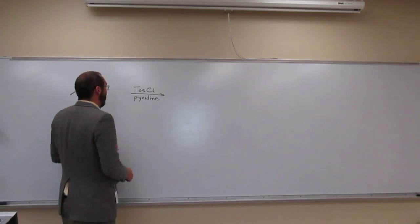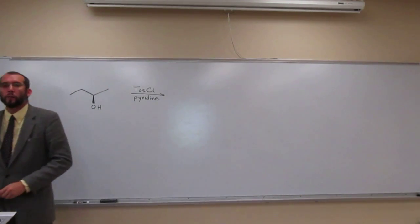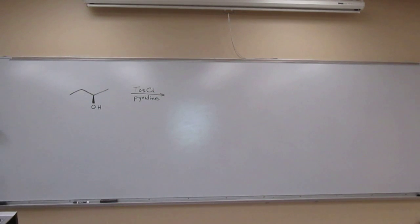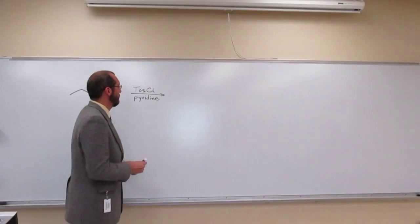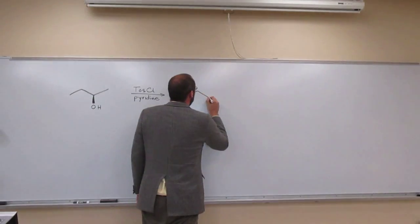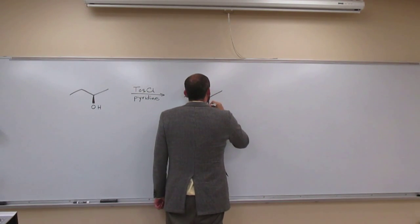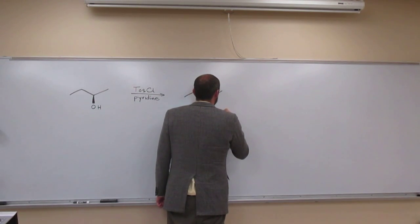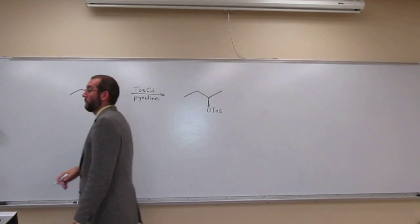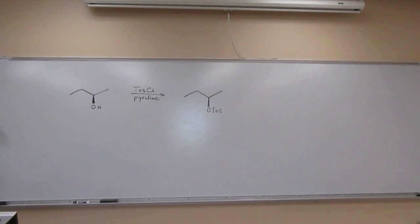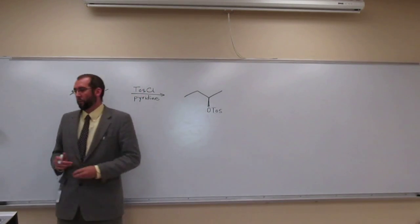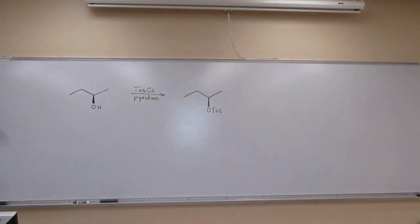So in order to do this mechanism, what's the product of this reaction? Can you draw it? Everybody draw it first. Is that what you wrote? With the wedge? Why is that important? Because we've got to identify our stereochemistry, okay?